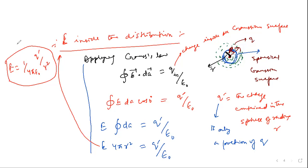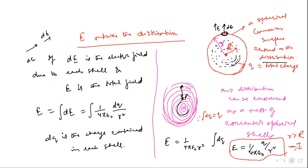This expression is correct, but it is in terms of Q', the charge contained within the sphere of radius r — not in terms of the total charge Q. I want this expression in terms of the total charge Q of the distribution.